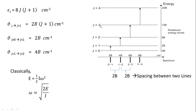These are the different rotational levels corresponding to J = 0, 1, 2, 3, 4. As J increases, the distance between two levels increases continuously. Classically, E = ½Iω², or equivalently ω = √(2E/I), where I is the moment of inertia. The spacing between two spectral lines is always 2B, as seen from the figure.